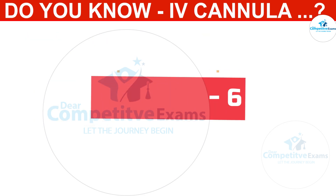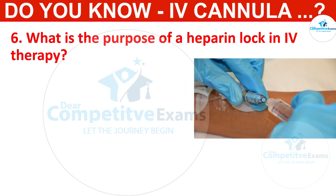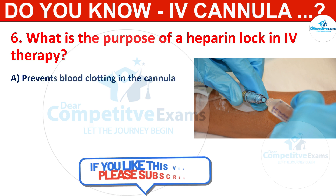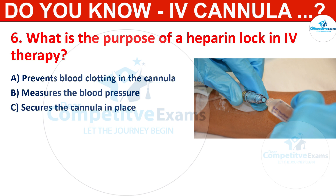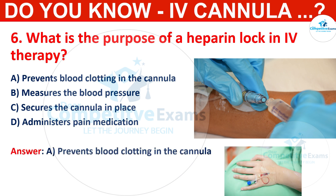Q6. What is the purpose of a heparin lock in IV therapy? Options: to prevent blood clotting in the cannula, to measure the blood pressure, to secure the cannula in place, or to administer pain medication. The correct answer is to prevent blood clotting in the cannula. Heparin locks are used to maintain patency and prevent blood clot formation in IV catheters.